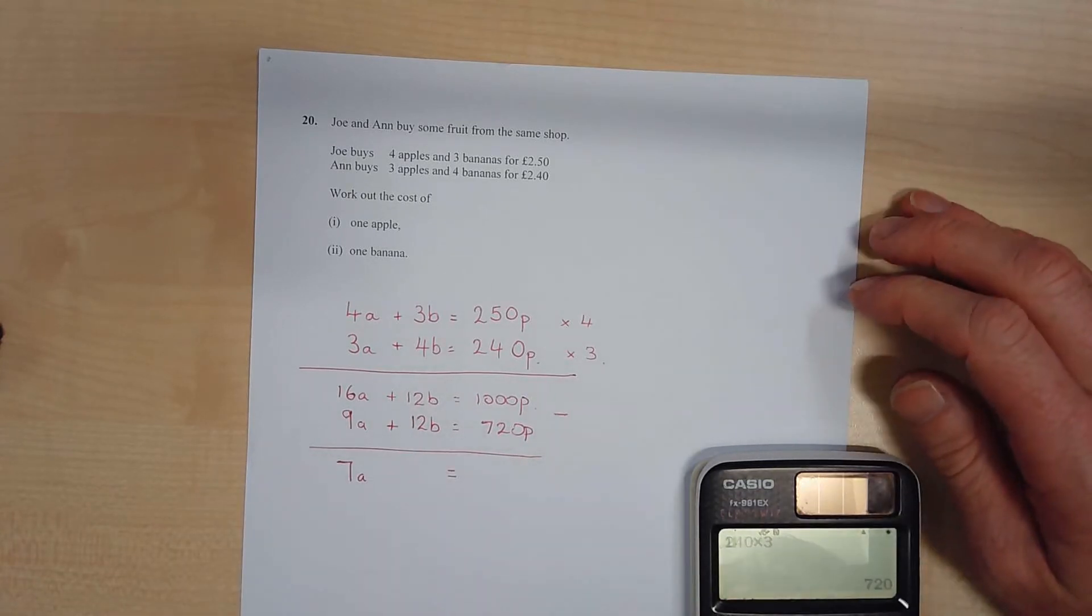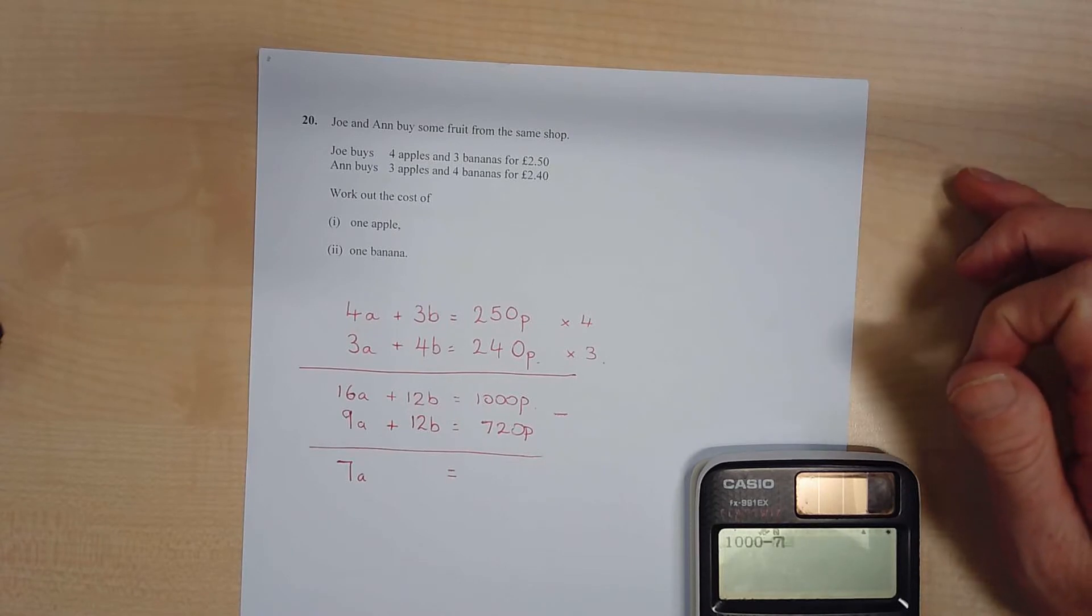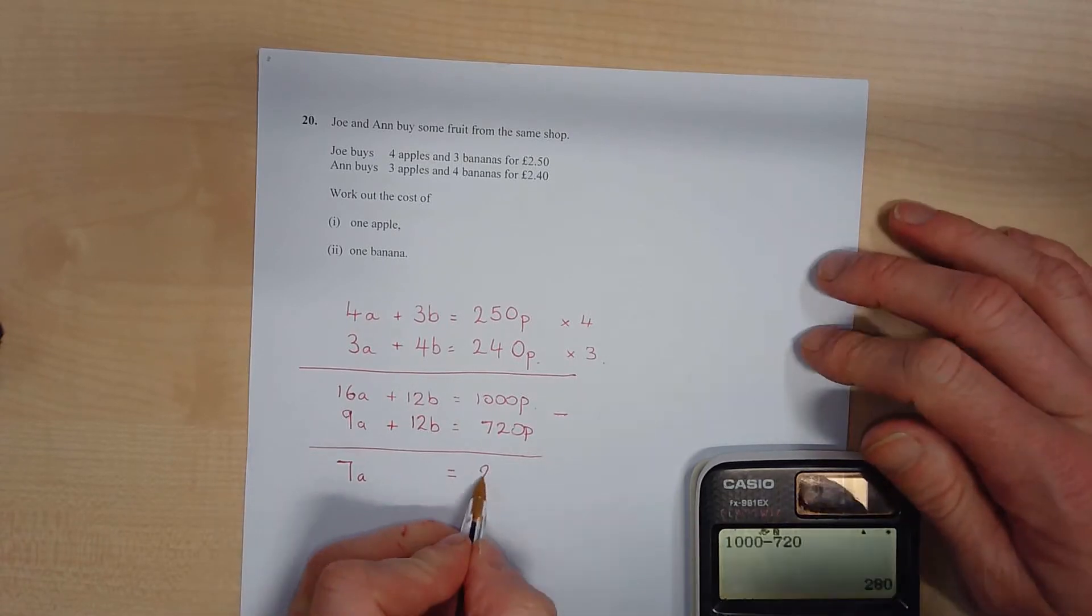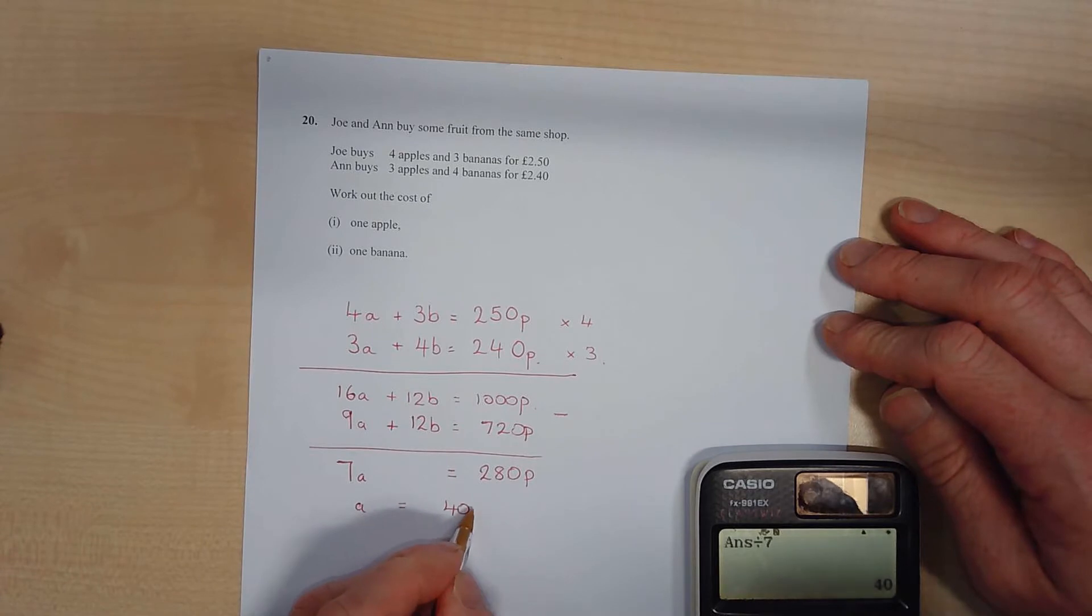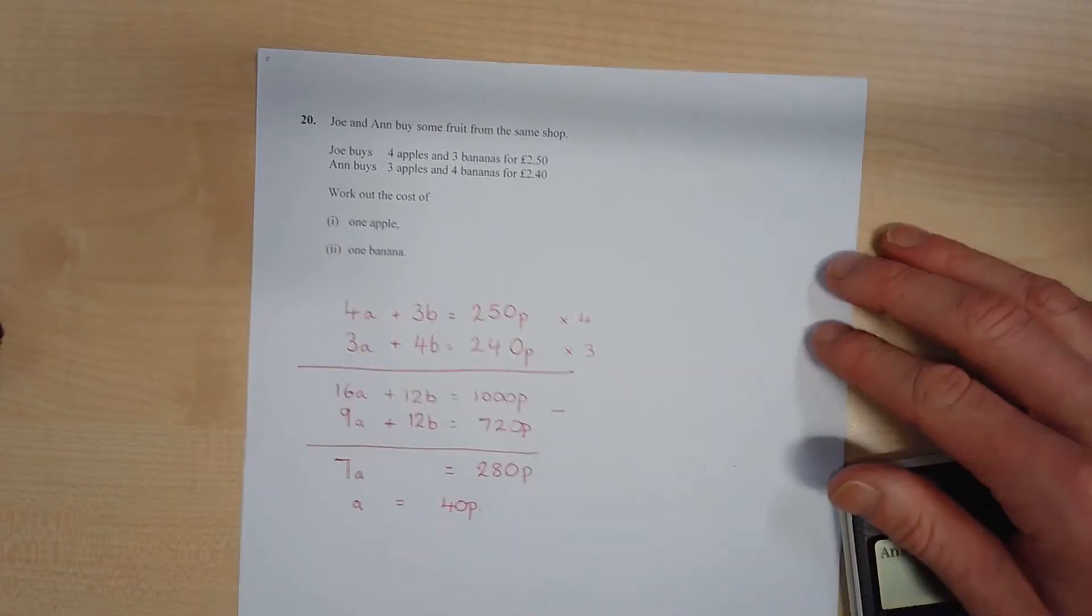We need to subtract them, and that's going to get rid of my bananas. So we've got 7 apples, the bananas disappear, and we've got 1000 take away 720 is 280p.